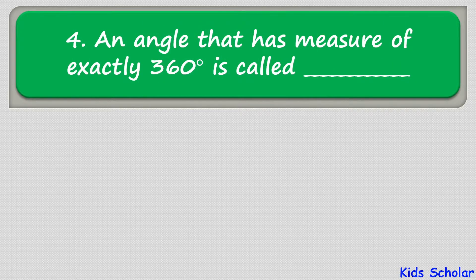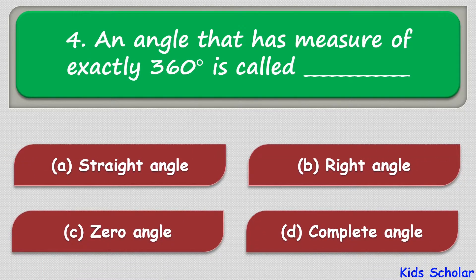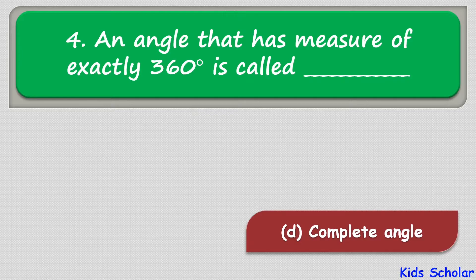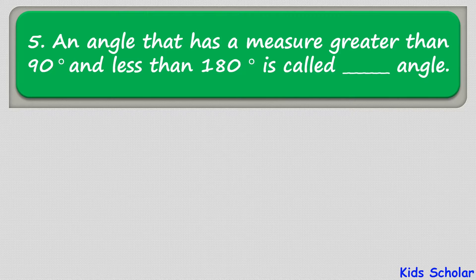The next question is: an angle that has a measure of exactly 360 degrees is called — the options are straight angle, right angle, zero angle, and complete angle. The correct answer is complete angle.